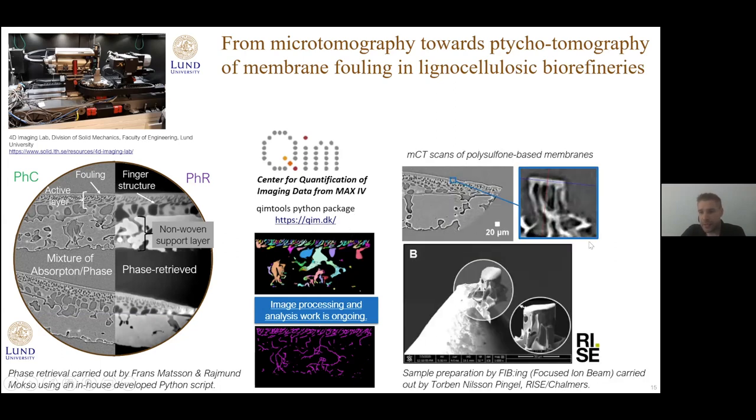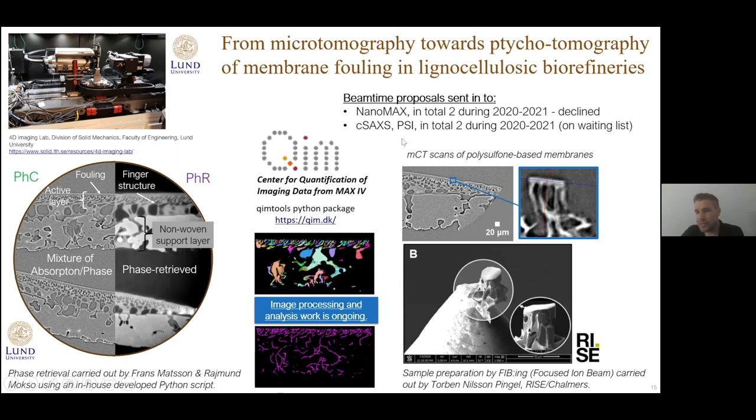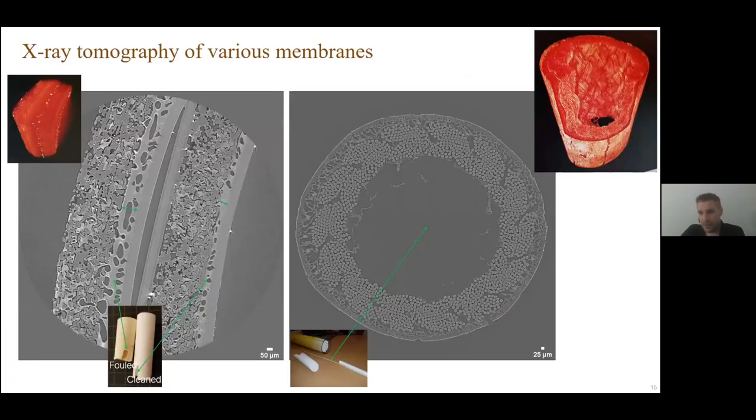Torben Nilsson Pingel, who is also here today, has prepared four or five FIB samples that have been placed on these omni pins. That's a standard way to put samples on top of pins. Then you can scan them at the TOMCAT beamline at PSI in Switzerland or at NanoMAX. We have applied for several beam times, but in Corona times, it was difficult to get beam time granted. For the TOMCAT beamline, we are currently on the waiting list, so we're hoping there will be brighter times ahead. With that, I will hand over again to Gregor.